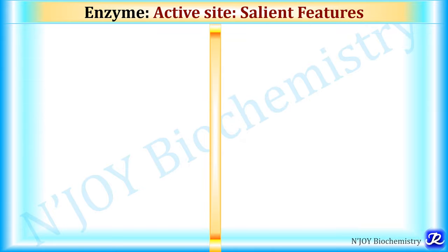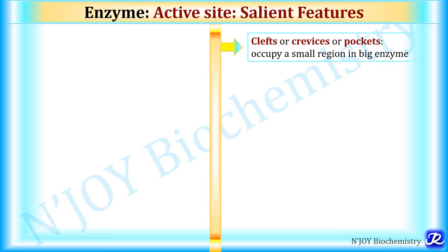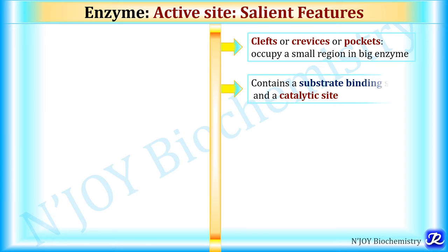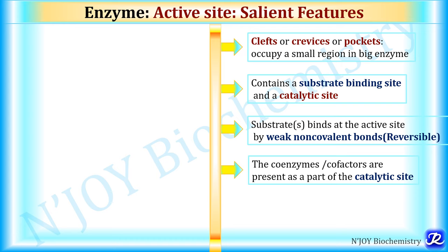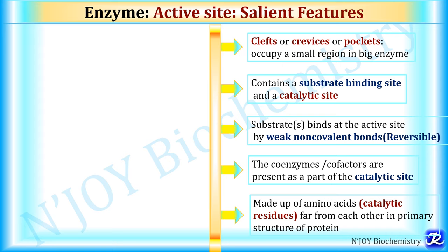Let's see the salient features of the active site of enzyme. Active sites are clefts, crevices, or pockets which occupy a small region in the big enzyme. The active site contains a substrate binding site and a catalytic site for the catalysis of the specific reaction. The substrate binds at the active site by weak non-covalent bonds, that is, reversible bonds.